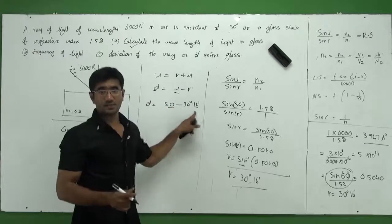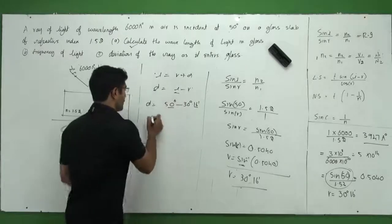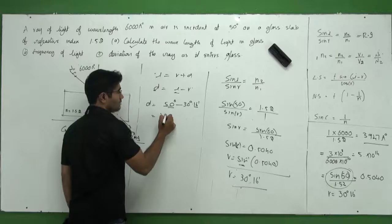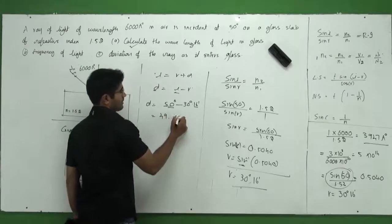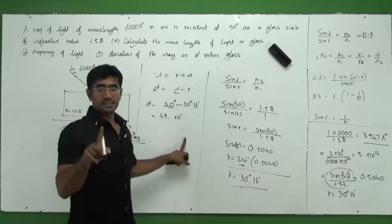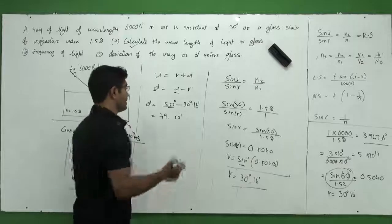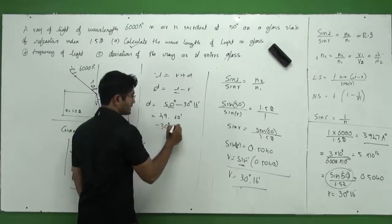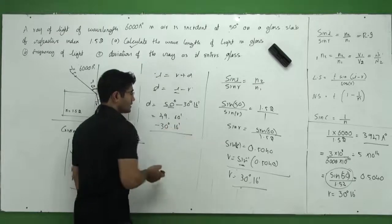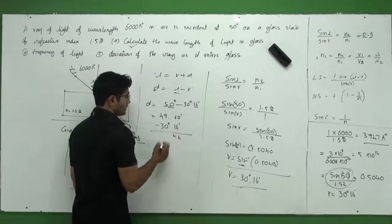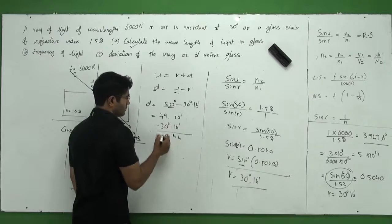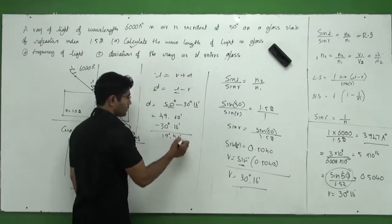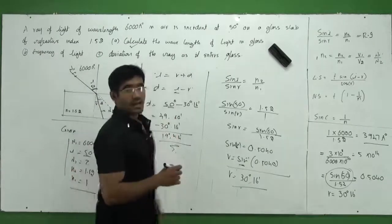What I do is I write 50 degrees as 49 degrees and 60 minutes because every single degree is made up of 60 minutes. All right, now from this I'll subtract minus 30 degrees and 16 minutes. So if you calculate how much you get, I get 19 degrees and 44 minutes would be the answer.